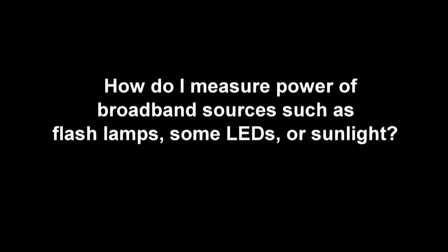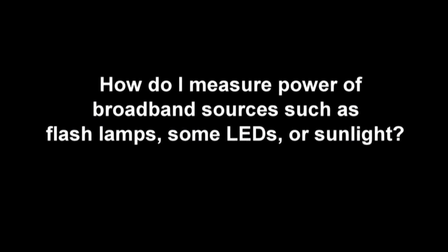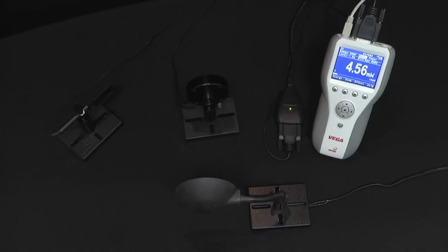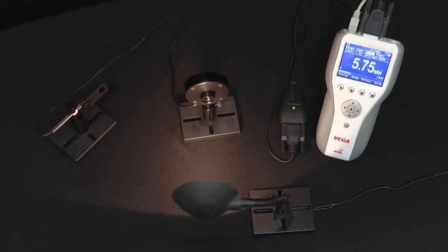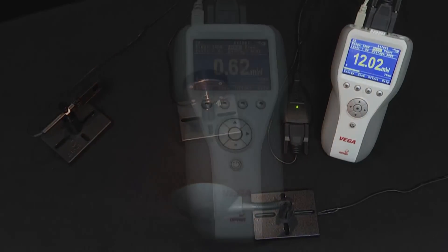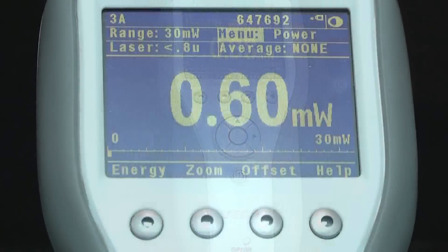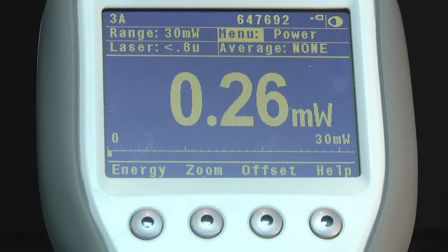We sometimes get asked how one can measure the power of broadband sources such as flash lamps, some LEDs, or sunlight. Since absorbing materials used in sensors have different relative sensitivity to different wavelengths, the power or energy meter has to know what wavelength light it's measuring in order to give a correct reading. In general we can divide our absorbers into two main types: those that are spectrally flat and those that aren't.